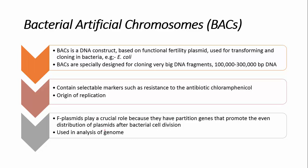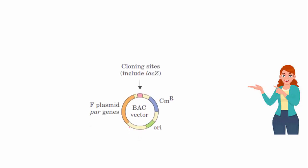BACs also contain an F-plasmid, and the F-plasmid has a very major role because it has partition genes. These promote even distribution of the plasmid during bacterial cell division. BACs are also usually used in genome analysis.